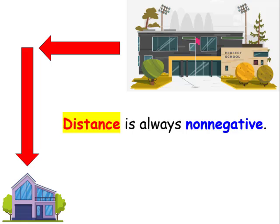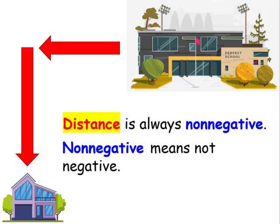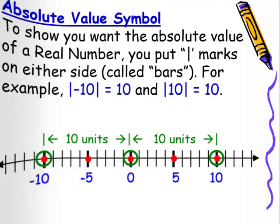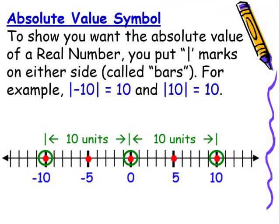Distance is always non-negative. Non-negative just means not negative. To show the absolute value of a real number, you put marks on either side called bars. For example, the absolute value of negative 10 is 10, and the absolute value of 10 is 10.